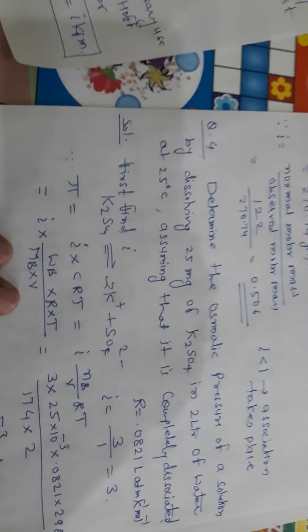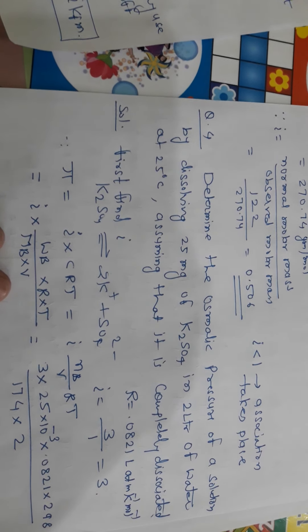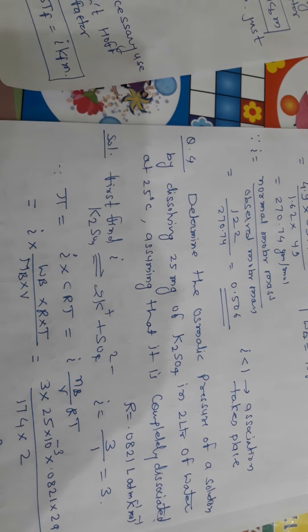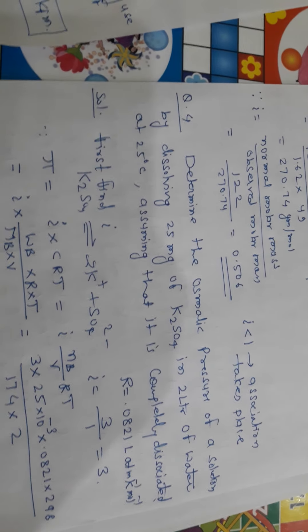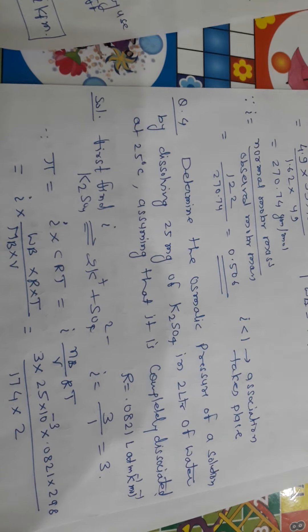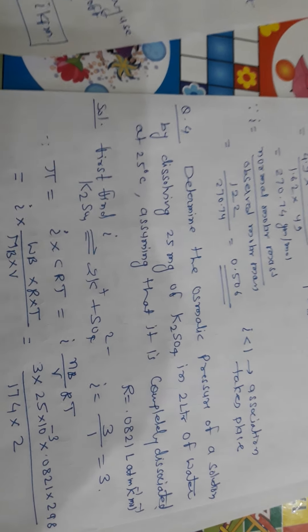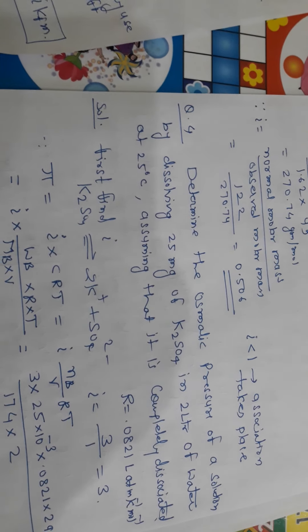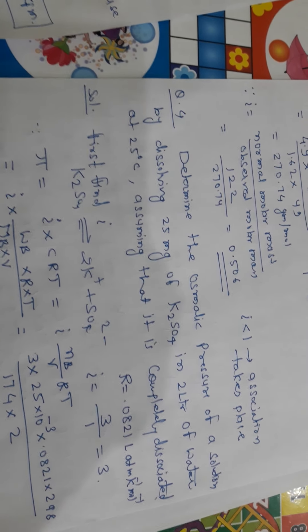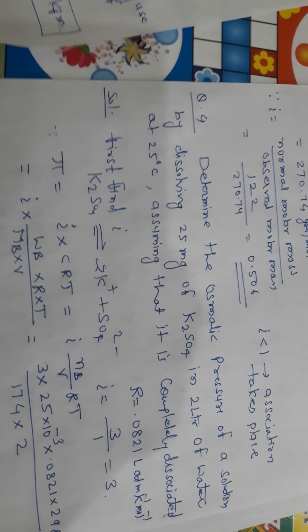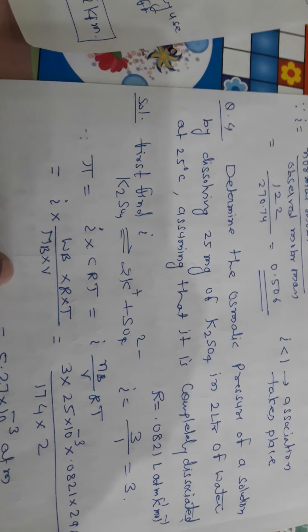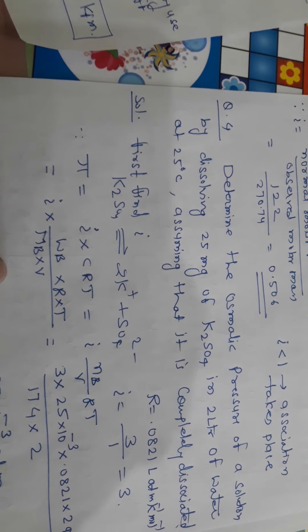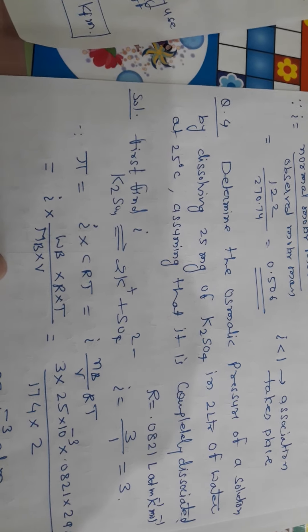Last, our last problem. Fourth one. Determine the osmotic pressure of the solution by dissolving 25 milligram of K2SO4, 25 milligram that means 25 into 10 to the power minus 3 gram. It is the Wb. K2SO4 in 2 litre of water. It is the volume of the water, that means solvent. V is equal to 2 litre. At 25 degree Celsius, that means 298 Kelvin. Assuming that it is complete dissociation, that means we have to use I. I can be calculated by K2SO4 gives rise to 2K+ plus SO42-. That means single molecule of K2SO4 converted into 2K+ ions and 1SO42- ion. So I is equal to 3 upon 1 which is equal to 3.